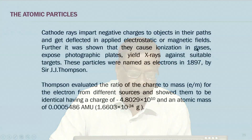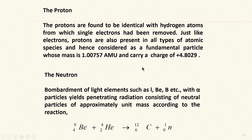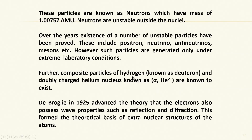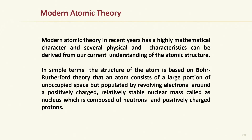I had shown you that the electron is a negatively charged particle having a charge of minus 4.8029 × 10⁻¹⁰, and an atomic mass of 0.0005486 AMU, which converted into grams is approximately 1.603 × 10⁻³. I had shown you the proton's charge and AMU, and that the weight of an electron is about 1640 times smaller. The existence of neutrons was also covered, and all these particles have been incorporated in our modern atomic theory.